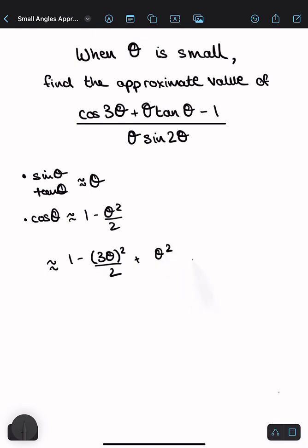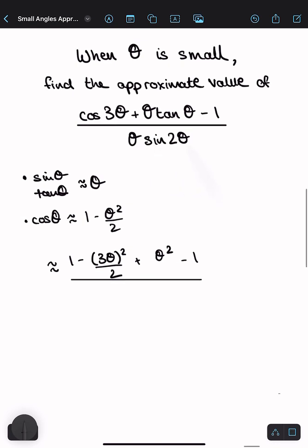So that's θ² minus 1 divided by θ times sine 2θ. Sine 2θ becomes 2θ. So this would be 2θ².